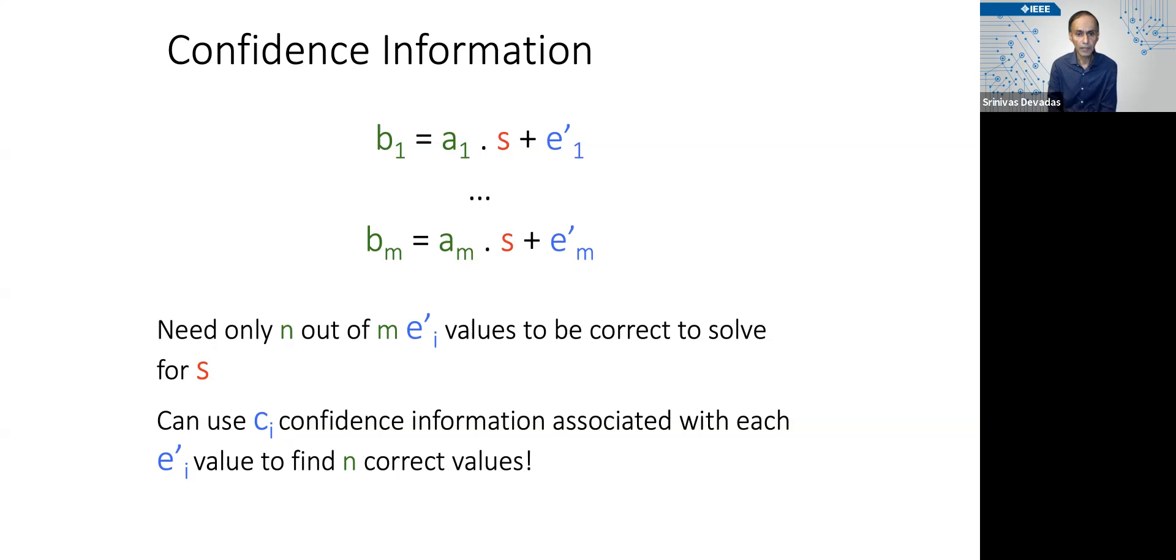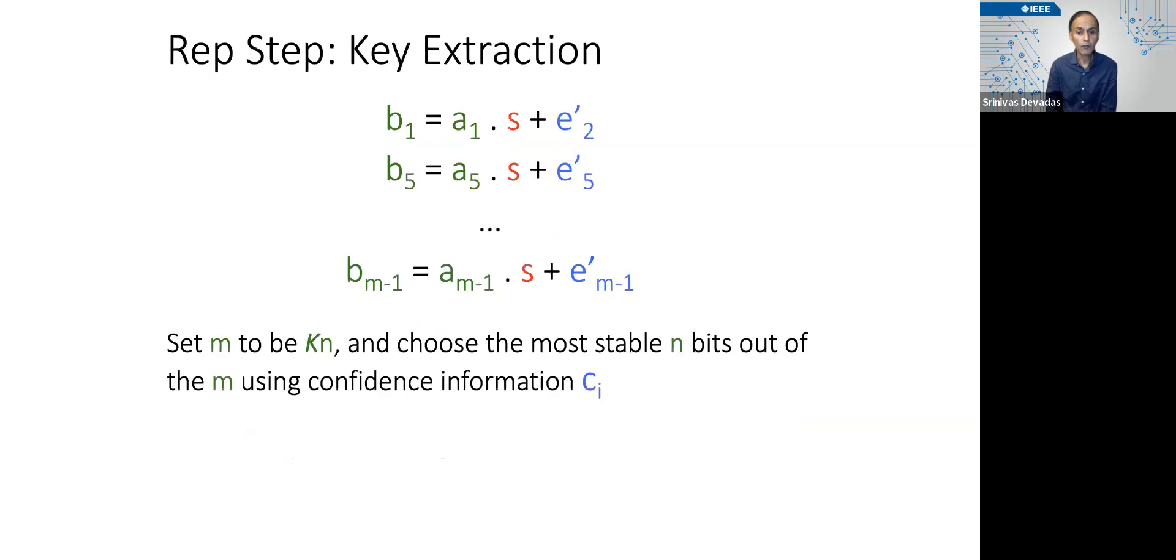And we're going to choose the appropriate N out of these M equations by simply looking for the most stable bits corresponding to the cᵢ values that are the largest.